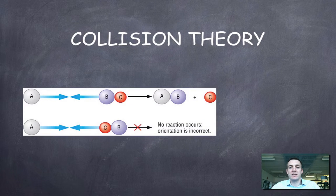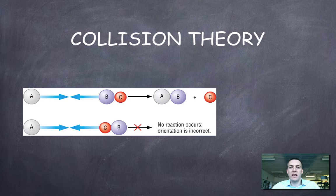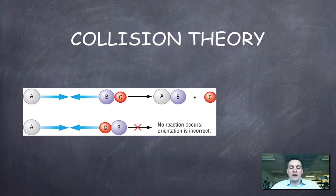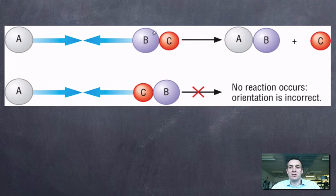And yet still, some collisions don't lead to reactions even if they've got enough energy. Now, why could that be? Well, if we look at this picture here, we can see that this particle of A is colliding with the BC particle and it's turning into some products, AB and C.